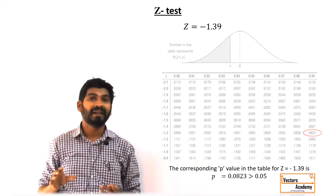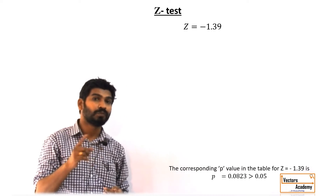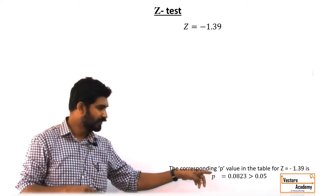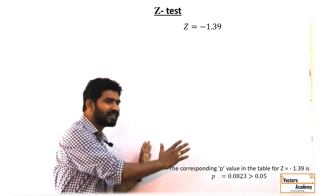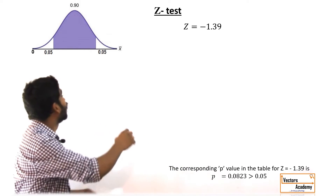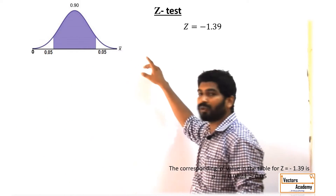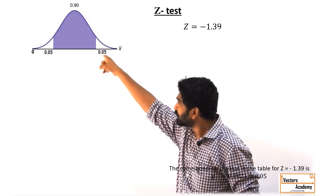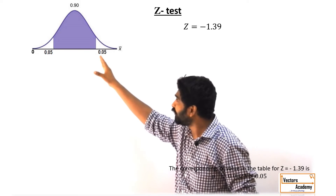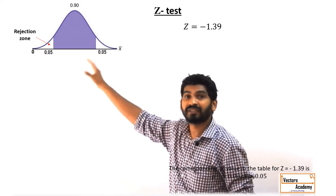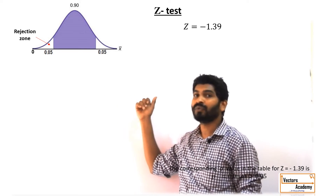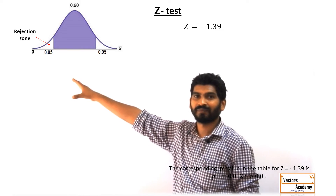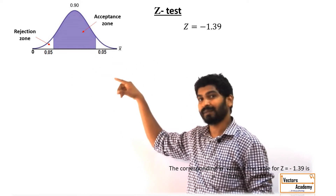This p-value is to be compared with the significance value, that is 0.05. Our calculated value is much greater than the significance level of 5 percent. The 5 percent significance level means the region to the left-hand side of 0.05 is the rejection region. If our calculated p-value is less than 0.05, we reject the null hypothesis. And if it is greater, we accept the null hypothesis.